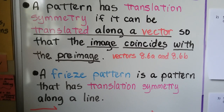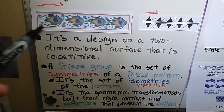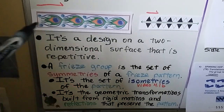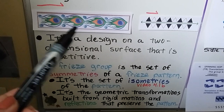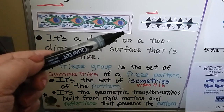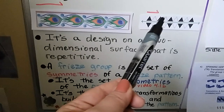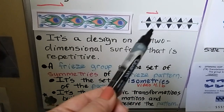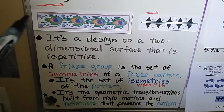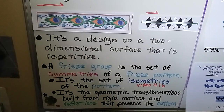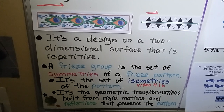A freeze pattern is a pattern that has translation symmetry along a line, like this little vector down here. Here we have an example of a freeze pattern. See how it's along a strip and it's just translating and sliding along. This one is translating but it's also reflecting across a line, and we can see the length of the vector that it's translating. It's a design on a two-dimensional surface that's repetitive.